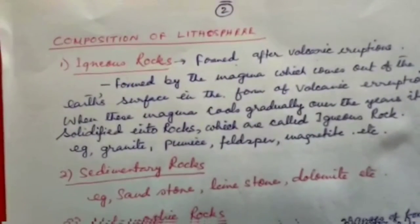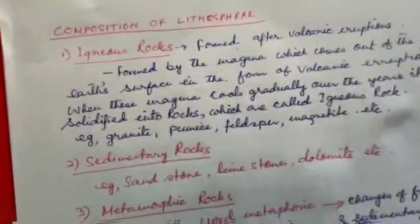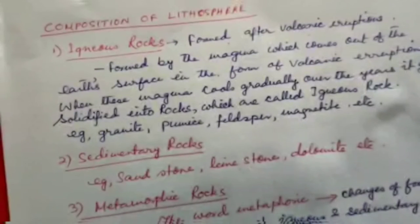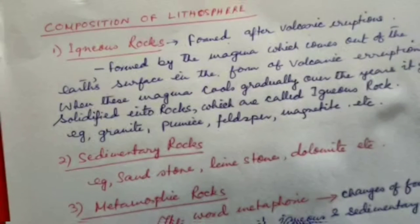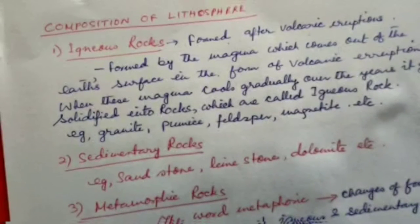Composition of the lithosphere: Number one — igneous rocks. Igneous rocks are formed by the magma which comes out of the Earth's surface in the form of volcanic eruptions. When this magma cools gradually over the years, it solidifies into rocks called igneous rocks. Examples include granite, pumice, feldspar, magnetite, etc.